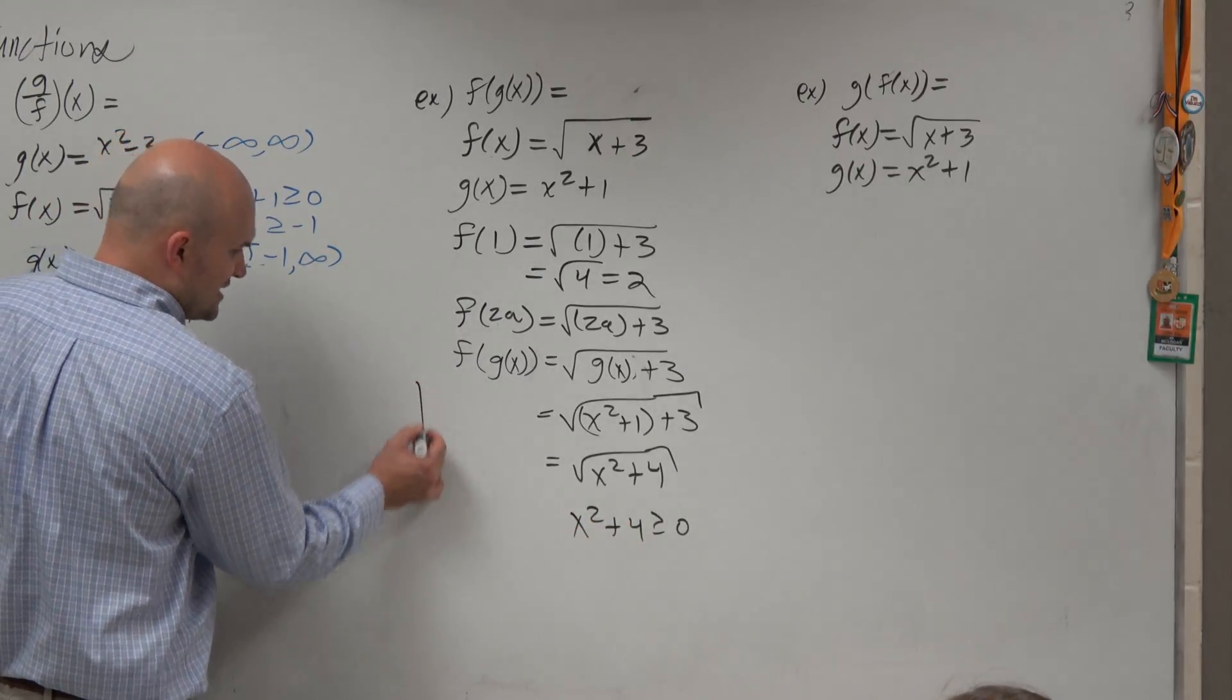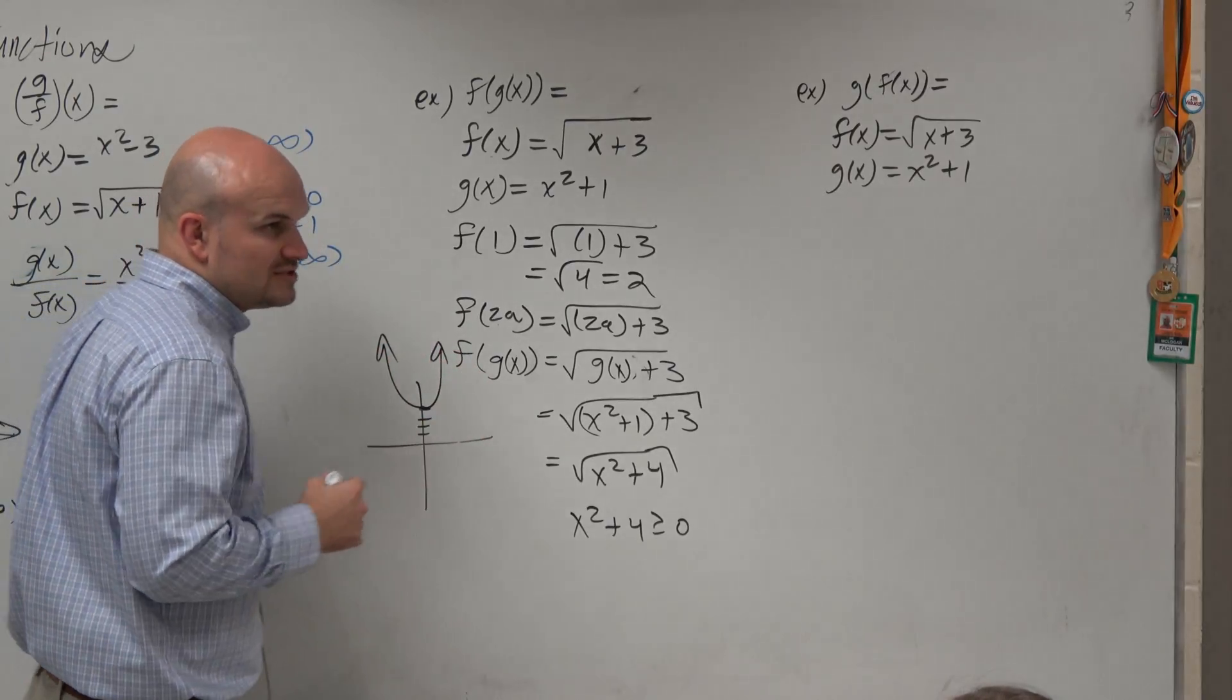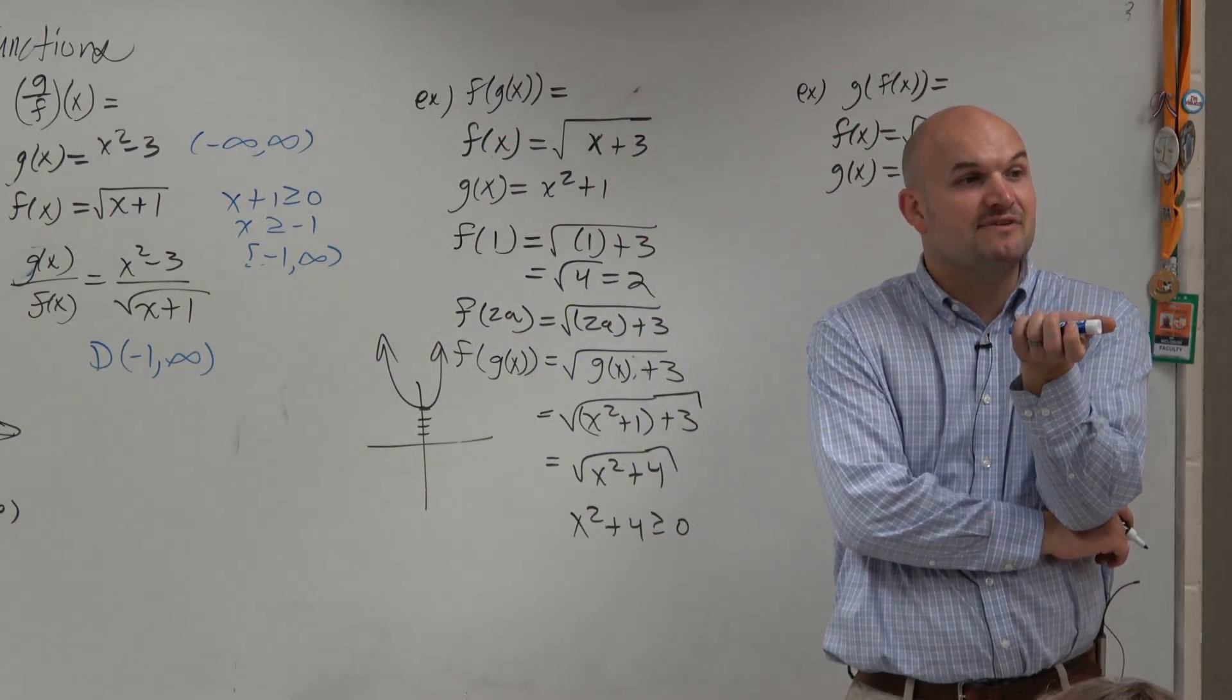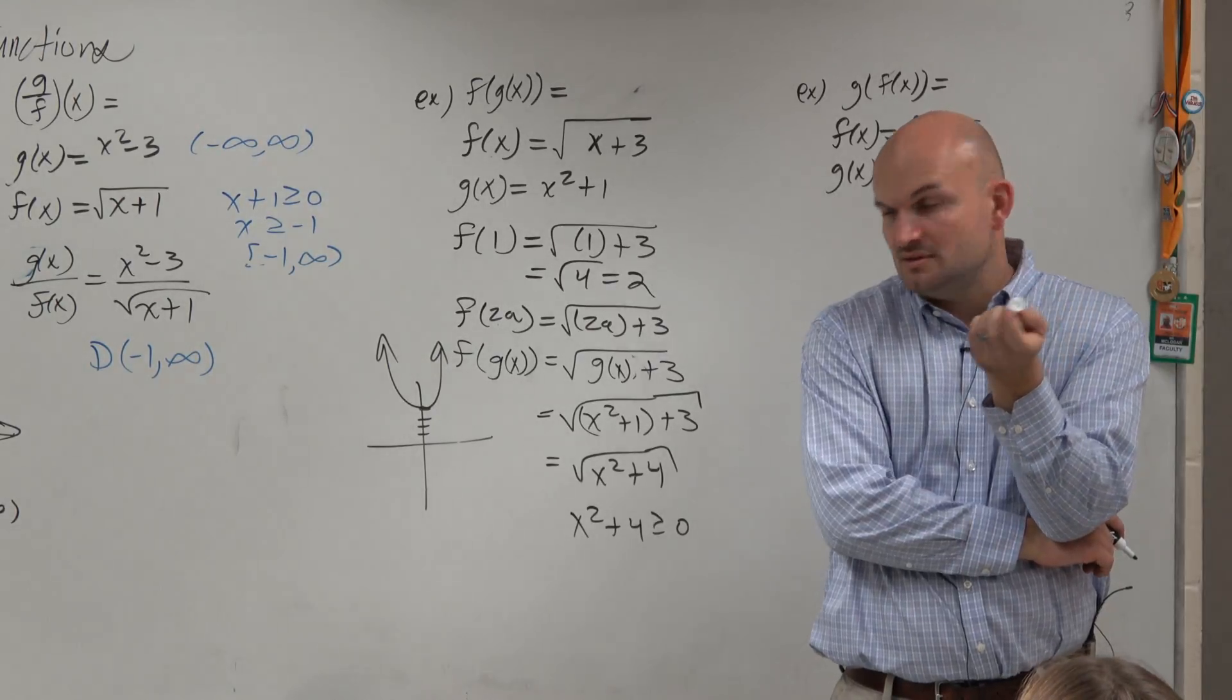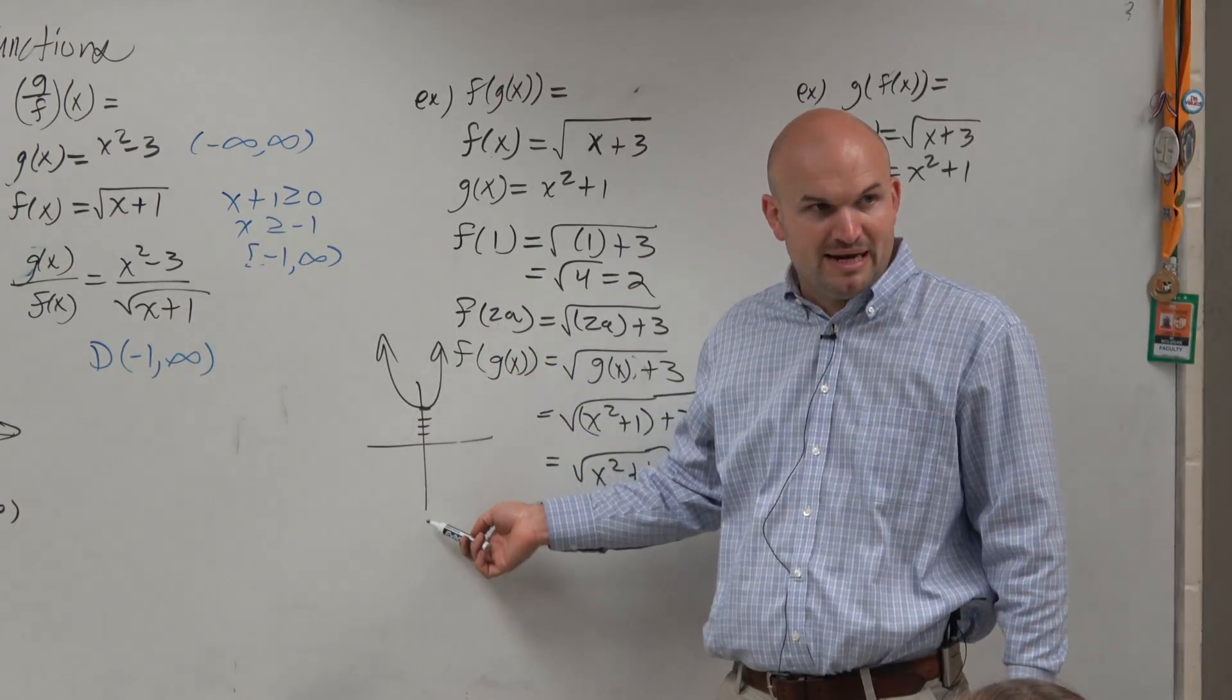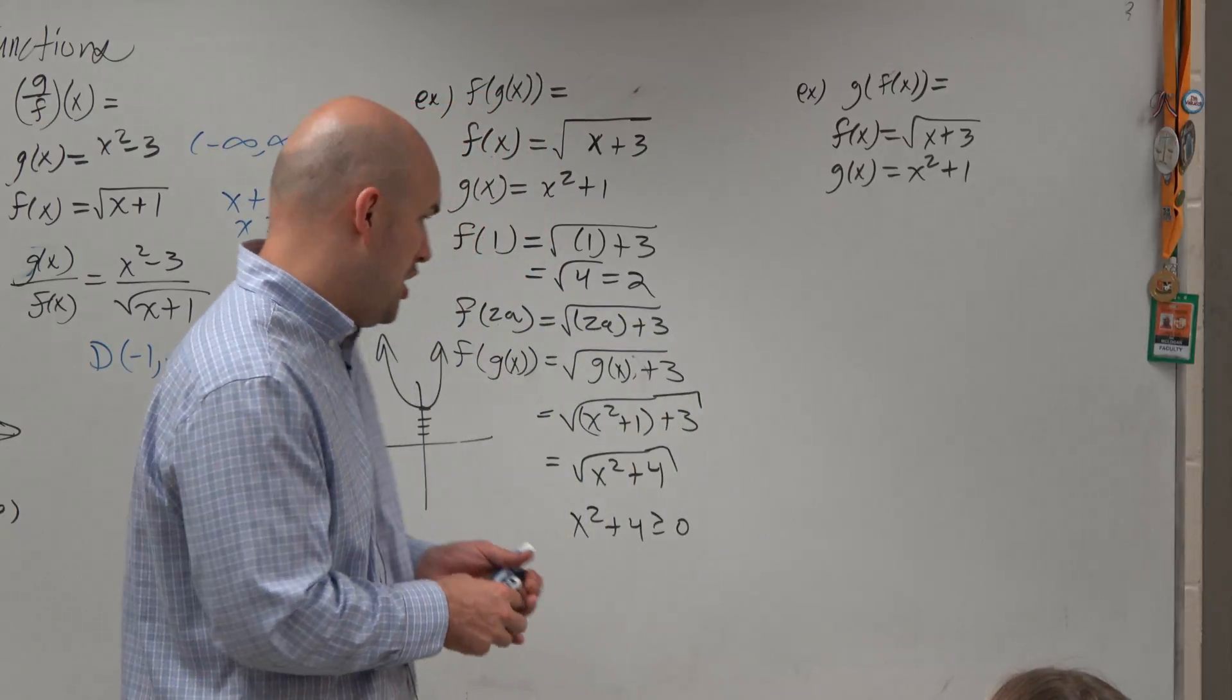If we graph x squared plus 4, for what x values are the y values positive? All of them. Is there any reason this parabola will ever be negative? No. So the domain is all real numbers. That was actually really easy.